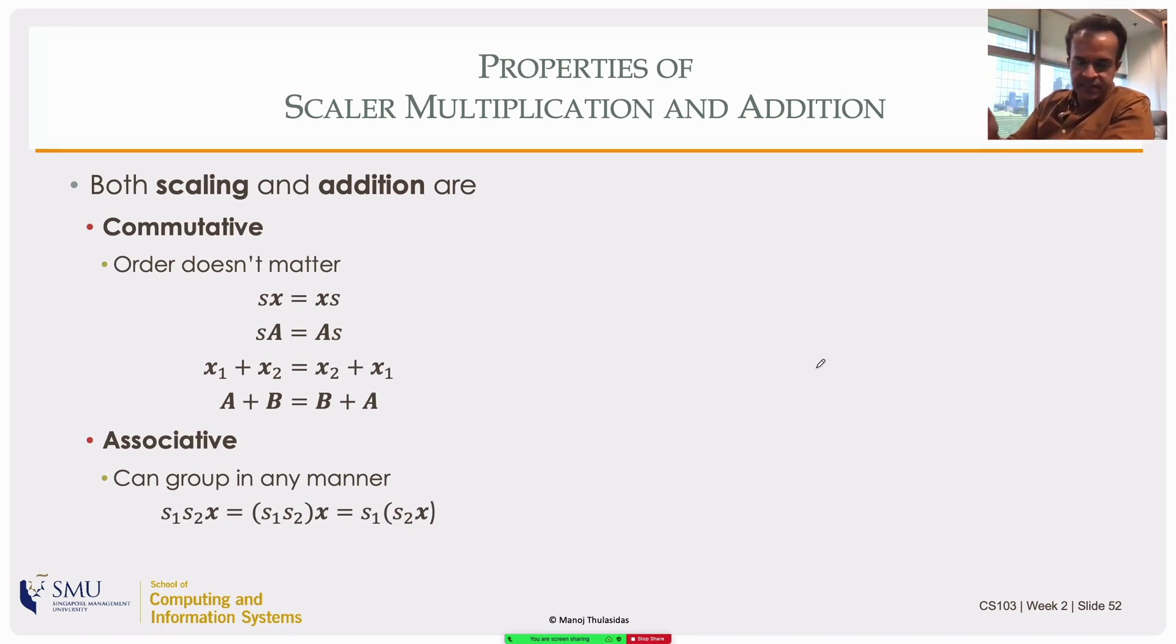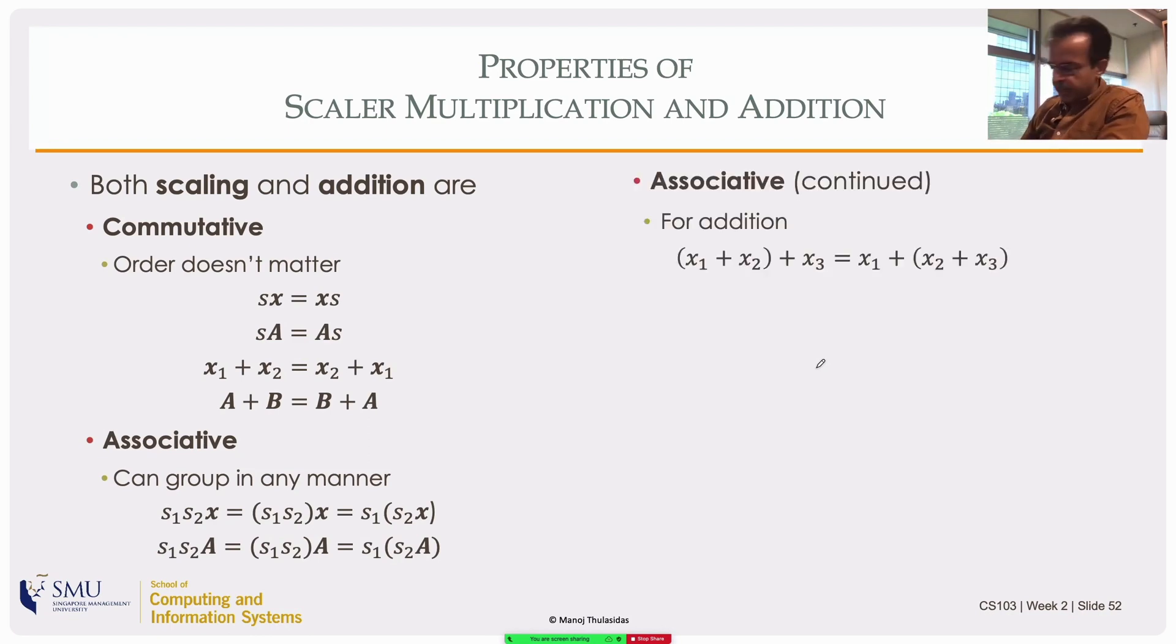They are also associative, which means you can group them in any order. s1(s2x) is the same as multiplying the scalars first and then scaling the vector, or scaling the vector with one and then the other. Of course you can commute also if you want. Same thing goes with associativity of scalar multiplication of matrices and for addition also.